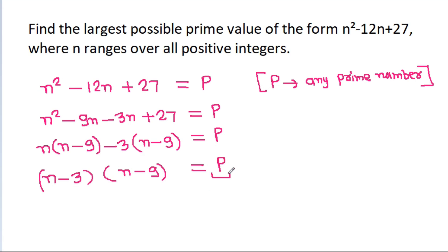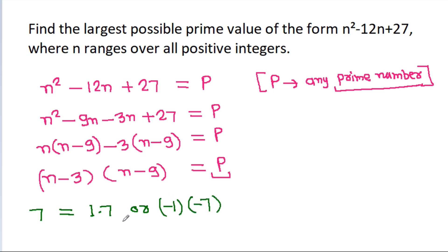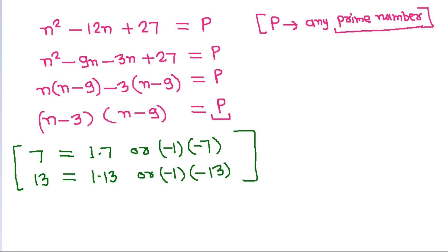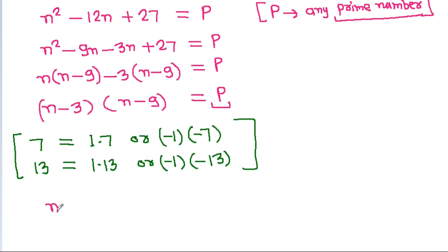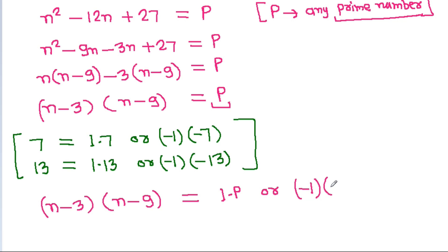Since p is a prime number, any prime number — for example 7 can be written as 1 times 7, or minus 1 times minus 7; similarly 13 can be written as 1 times 13, or minus 1 times minus 13. So (n minus 3)(n minus 9) equals p, and p can be written as 1 times p, or minus 1 times minus p.